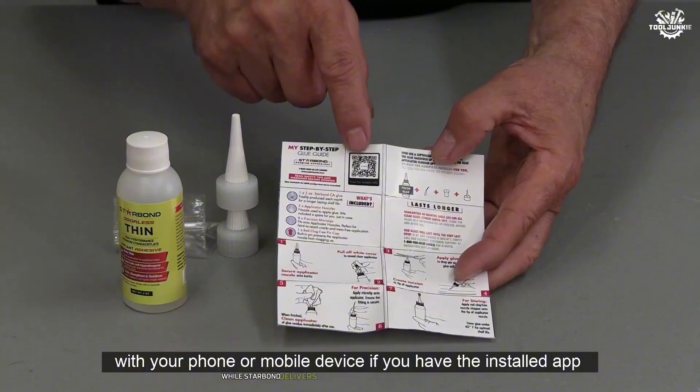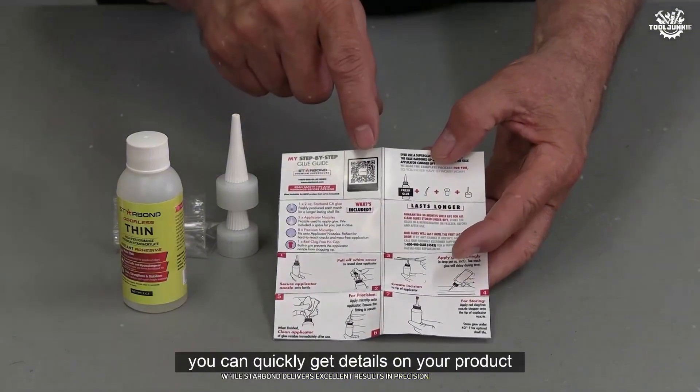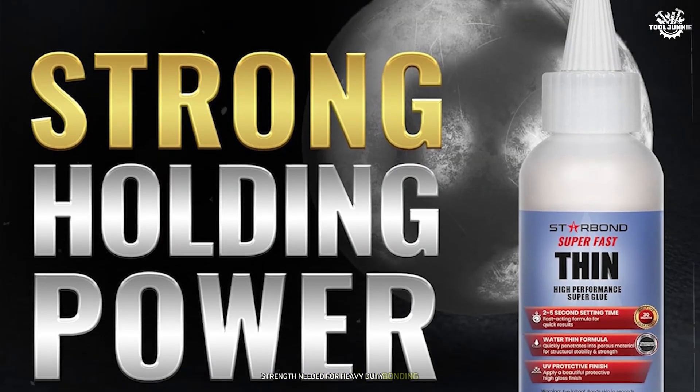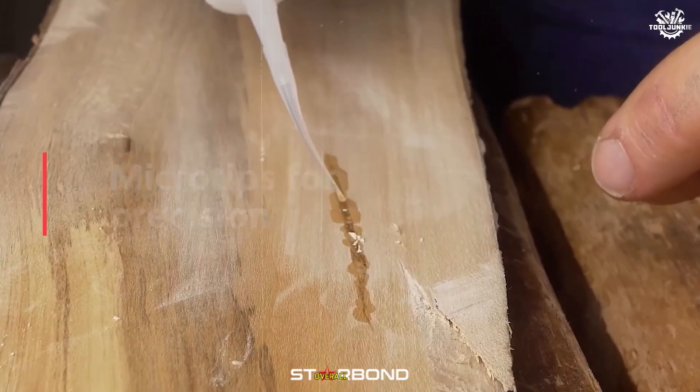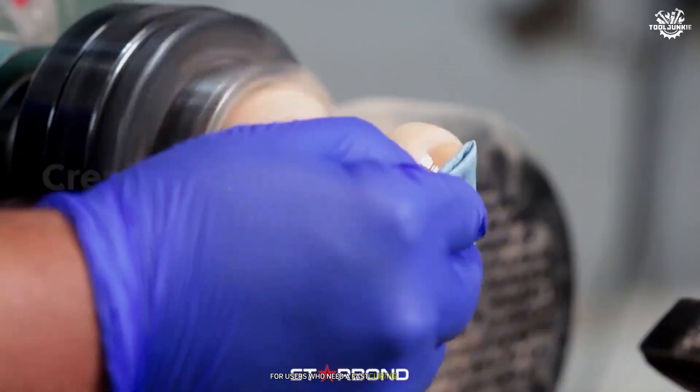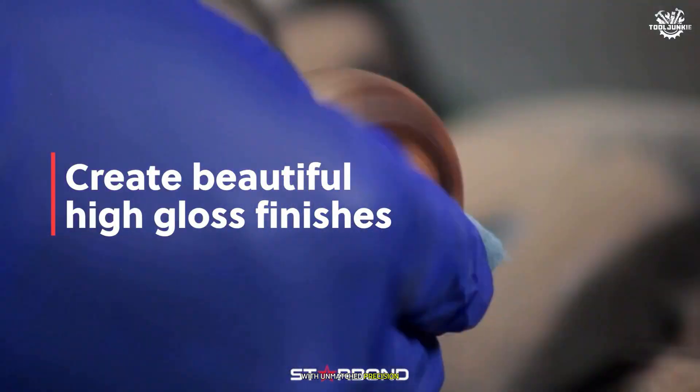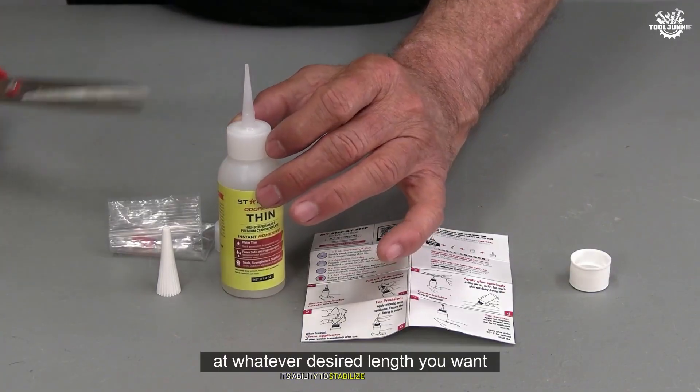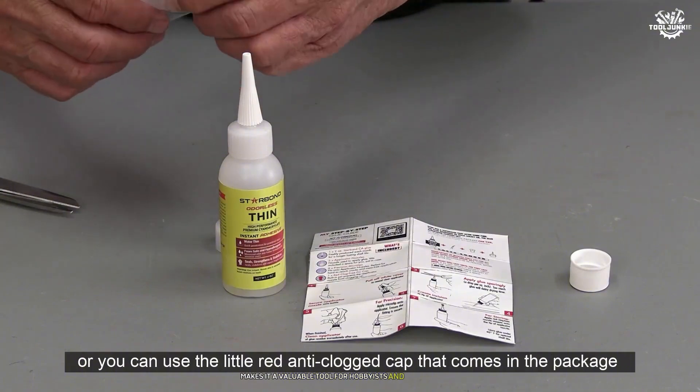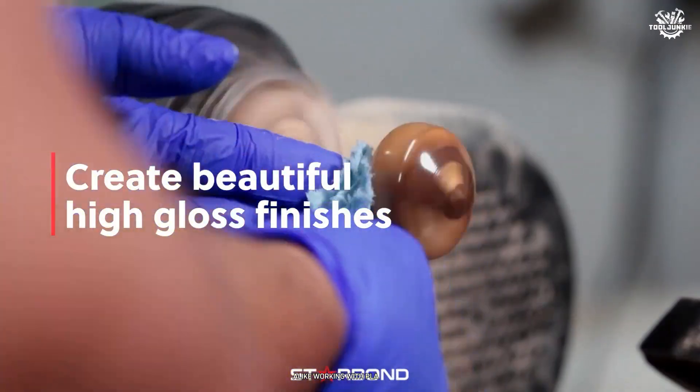Additionally, while Starbond delivers excellent results in precision applications, it may not provide the structural strength needed for heavy-duty bonding tasks. Overall, Starbond Superfast Thin is an excellent choice for users who need a fast-curing adhesive with unmatched precision. Its ability to stabilize delicate parts and create strong bonds in tight spaces makes it a valuable tool for hobbyists and professionals alike working with PLA models.